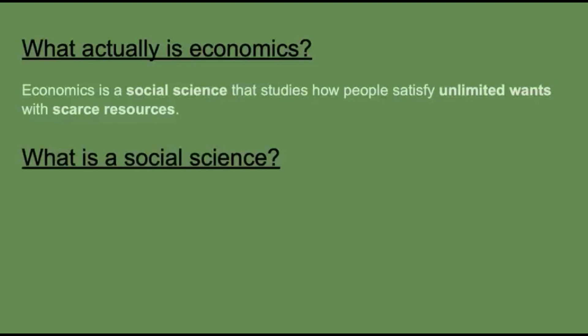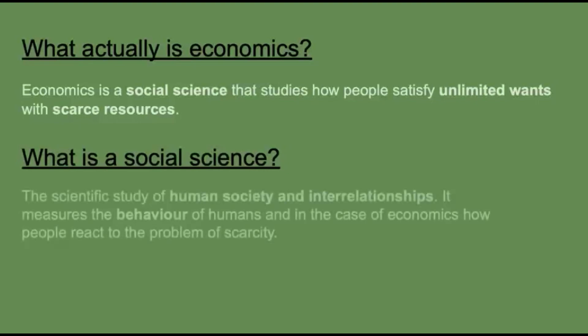So what is a social science? A social science is the scientific study of human society — it measures the behaviour of humans, and in the case of economics this is how people react to the problem of scarcity.